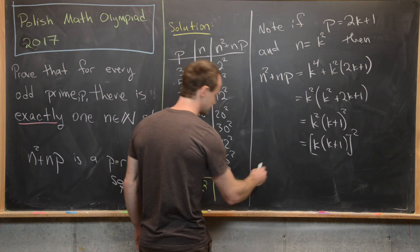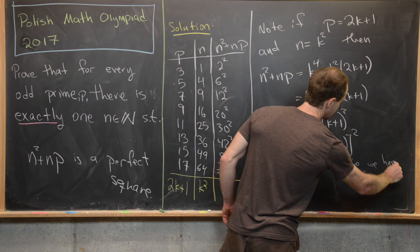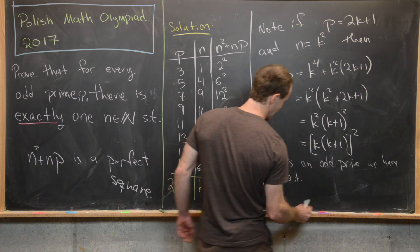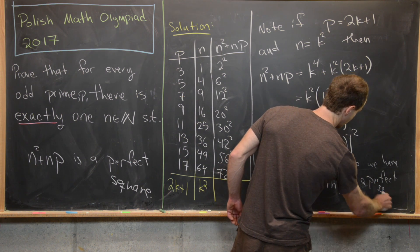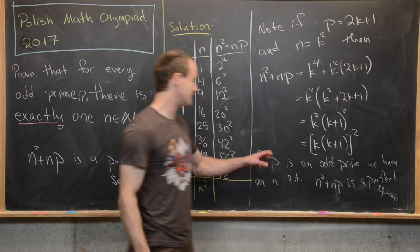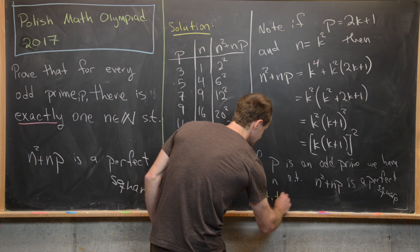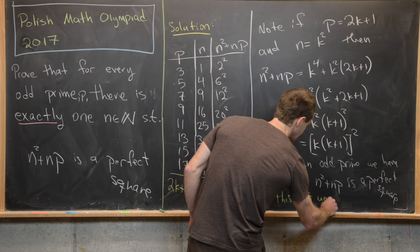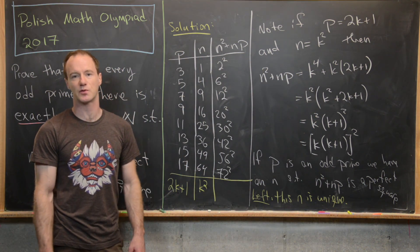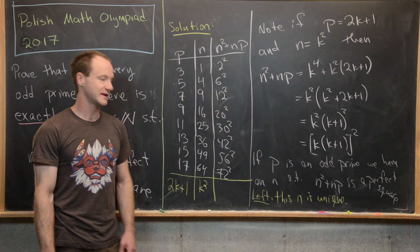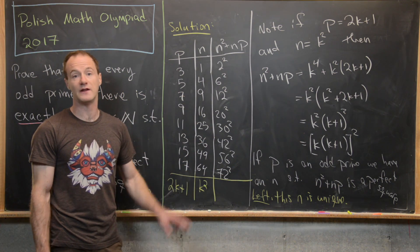So let's see what we've got going on here. So if p is an odd prime, we have an n such that n squared plus np is a perfect square. So what is left to show is that this n is unique. So left to show is that this n is unique. Because in fact, we didn't use the primeness of p at all, we just used the oddness of p at this point. So we'll probably have to use the primeness of p in order to prove the uniqueness of this n. Okay, I'll go ahead and clean up the board and then we will get to that.